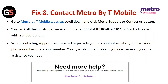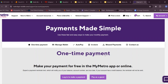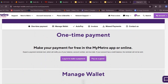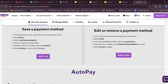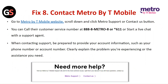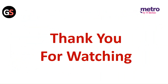Fix 8: Contact Metro by T-Mobile. Go to the Metro by T-Mobile website, scroll down and click on Metro Support or the Contact Us button. You can call their customer service number or start a live chat with a support agent. When contacting support, be prepared to provide your account information such as your phone number or account number, and clearly explain the problem you are experiencing or the assistance you need.